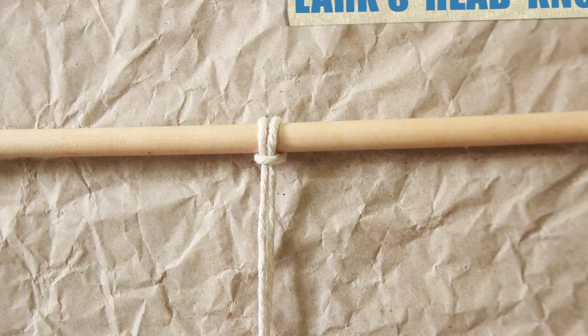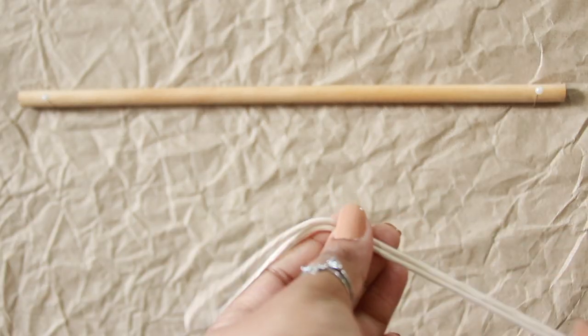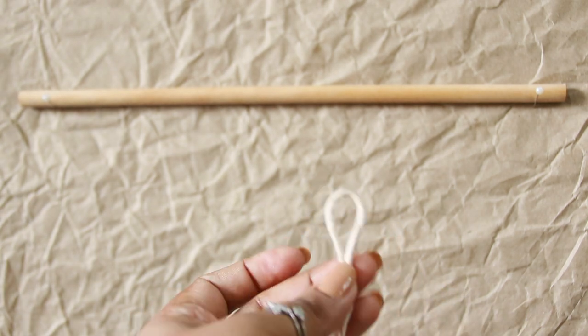For lark's head knot, the strand is on the front side. Find the center of your cord by folding it in half.